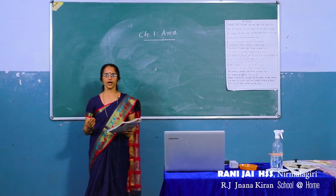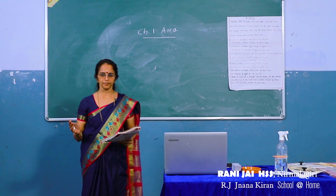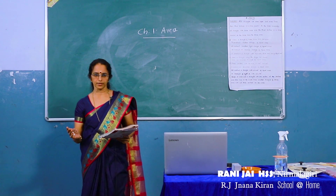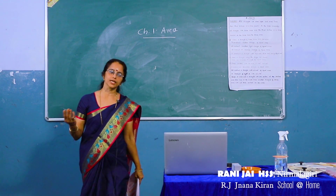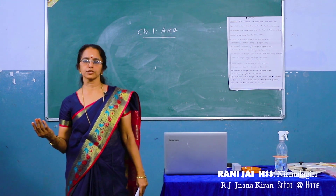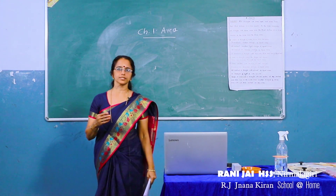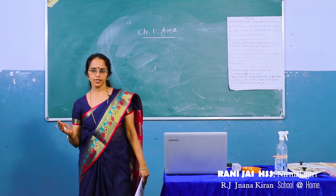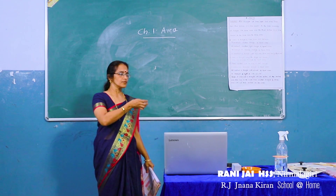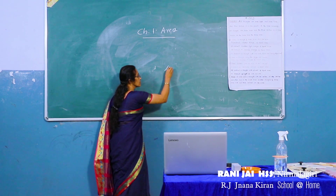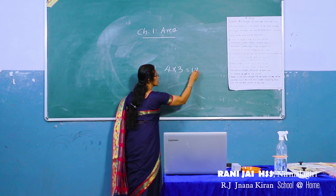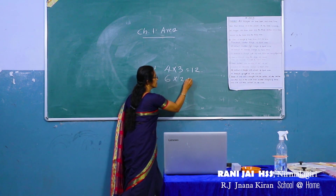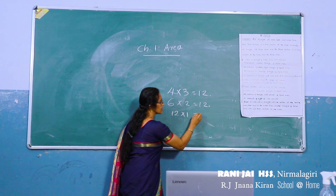Draw a rectangle of area 12 cm square. Children, you know what is the area of a rectangle? Length into breadth. So the measure is length and breadth. If the product is 12, you know 4 into 3 is 12. We can use 4 into 3 equals 12. Another measure is 6 into 2 equals 12. Also 12 into 1 equals 12.